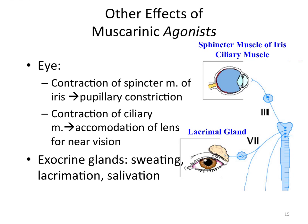I want to talk about two locations where muscarinic agonists have clinical effects we can recognize and take advantage of. First, the exocrine glands — virtually every gland is going to be stimulated to increase secretion. Sometimes we try to counter this using muscarinic antagonists like atropine to reduce secretions, for example, in a pre-operative setting — one of the goals being to reduce natural secretions that might be overstimulated during a surgical scenario.